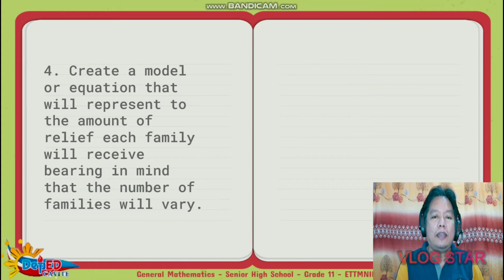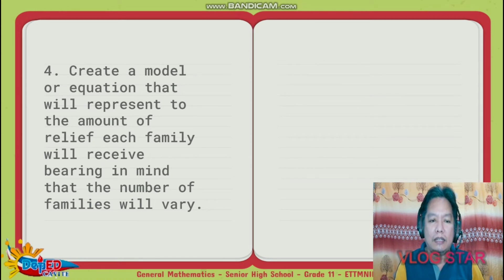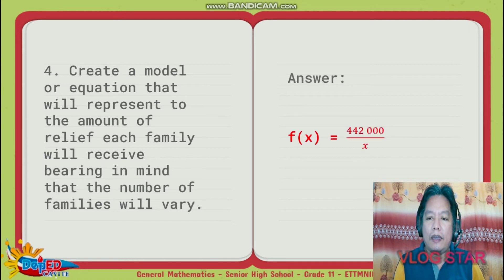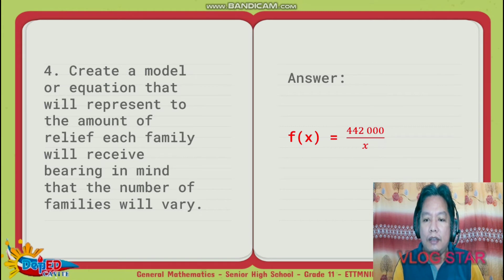Number 4: create a model or equation that will represent the amount of relief each family will receive, bearing in mind that the number of families will vary. The answer is F of X equals 442,000 over X, where X is the number of families.